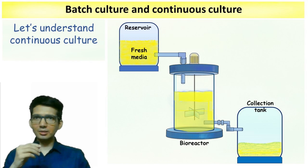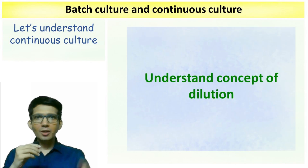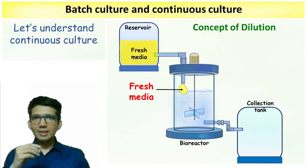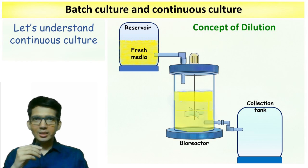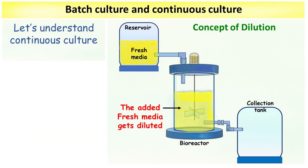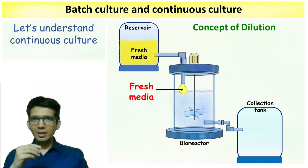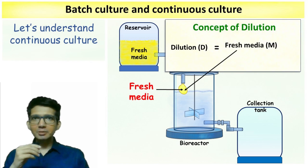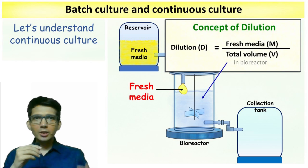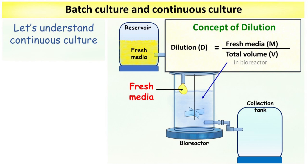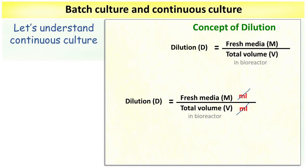To understand continuous culture we must understand the concept of dilution. When fresh media is added to the bioreactor, it gets diluted in the large bioreactor. Mathematically, the volume of fresh media added divided by the total volume of the bioreactor gives us the dilution. Dilution is a unitless number because the units on the numerator and denominator cancel out.